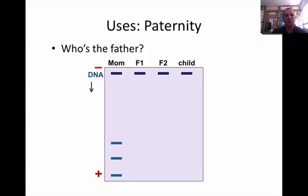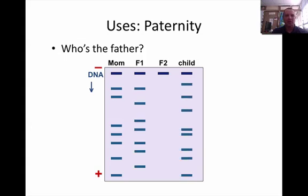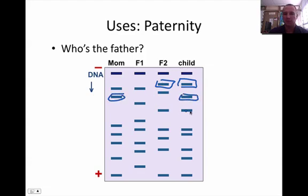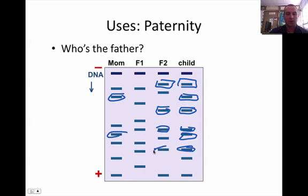It can also be used for paternity reasons. This is the mom and this is the child — we can tell who the daddy is. Mom and dad are going to have a combination of bands in the child. If you look, this band belonged to this person, this one belonged to mom, and so on down the line. You can tell by looking at this that the child had to be between mom and F2.